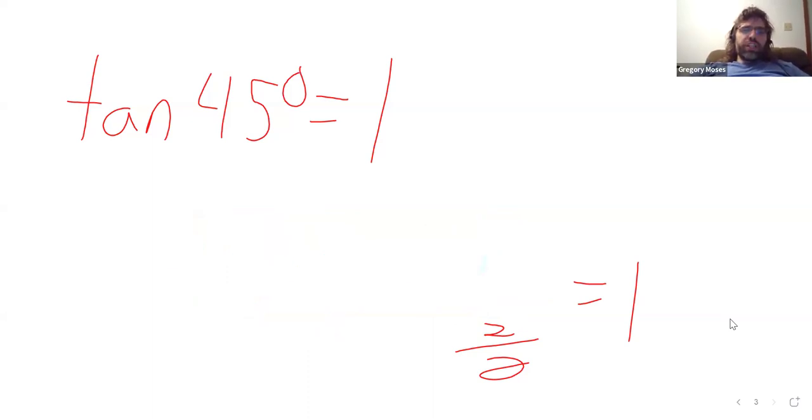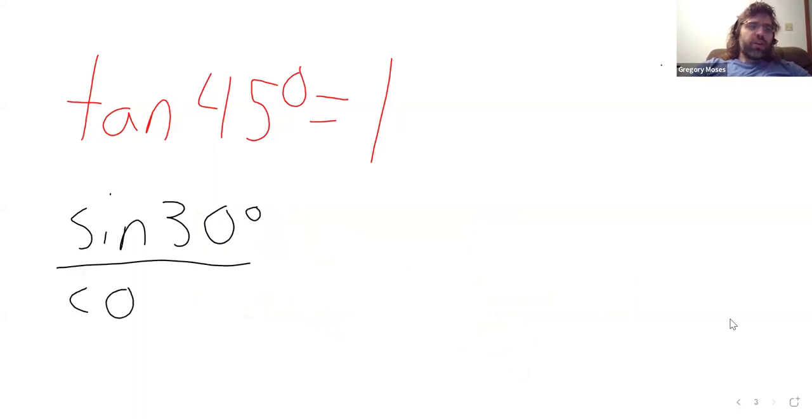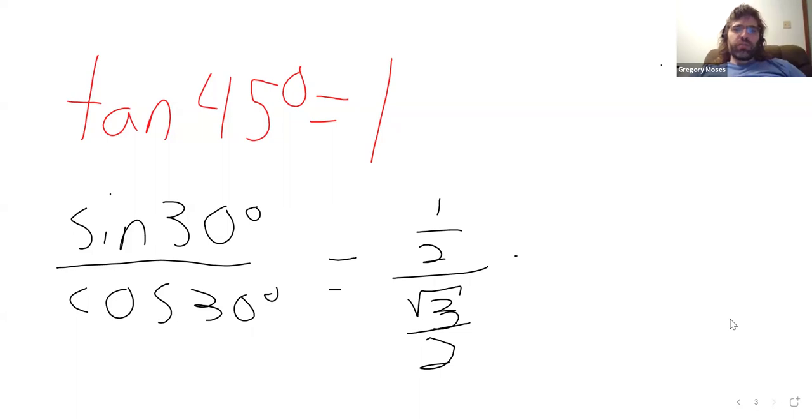30 degrees, I don't know myself. It's something that we have not bothered committing to memory, but we can figure it out. The sine of 30 degrees over the cosine of 30 degrees. 1/2 over the square root of 3 divided by 2 is 1 over the square root of 3.